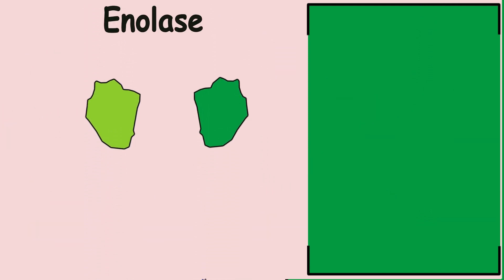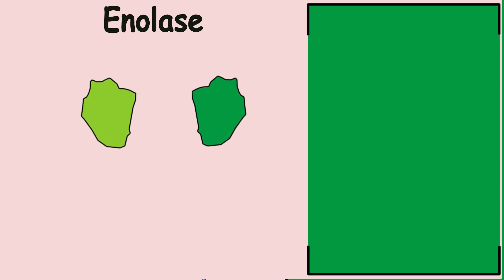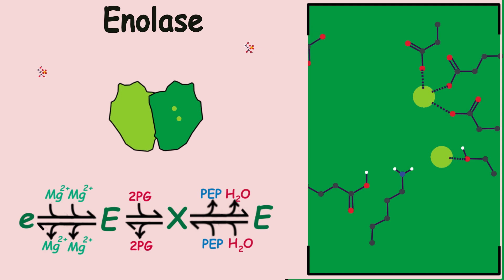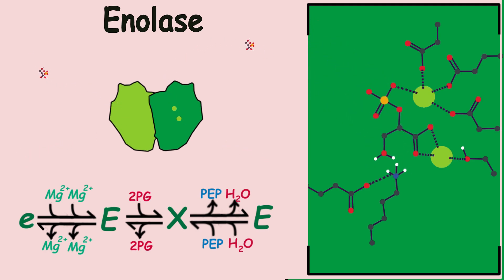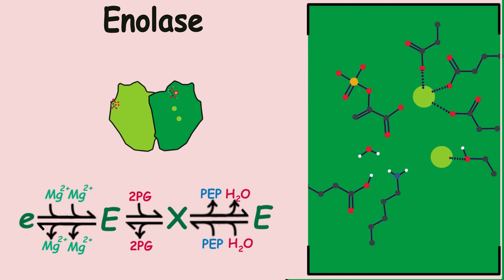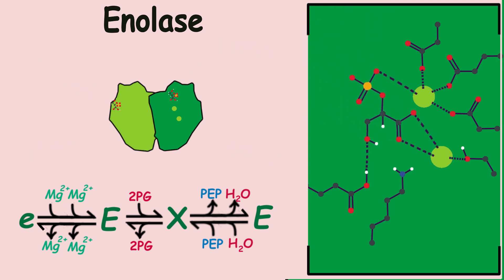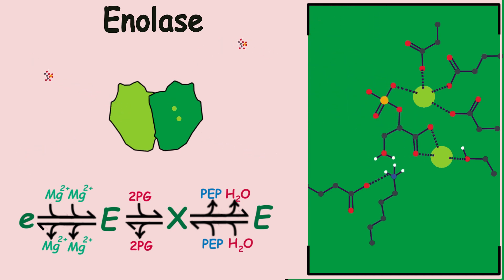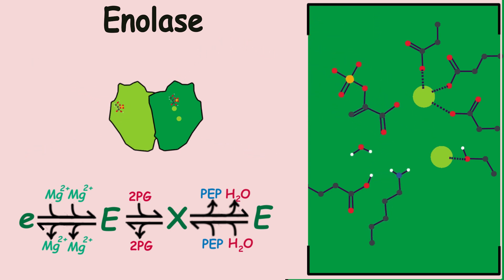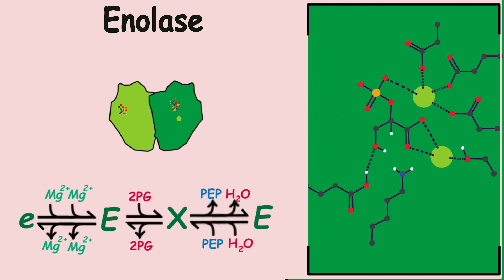The ninth reaction is carried out by the protein enolase; two of them bind together to form a dimer. In this reaction, water is extracted from the molecule to form phosphoenolpyruvate. Two magnesium ions are used: one serves to hold the molecule in place and the other to carry out the reaction.